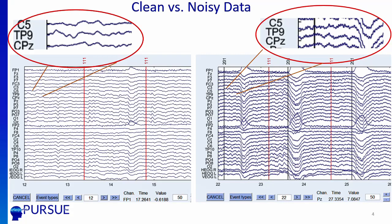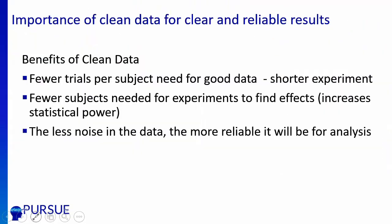For EEG, what does clean data mean? Here's an image showing on the left pretty clean EEG data, and on the right fuzzier data with more noise — a lot more eye blinks. That would be an example of noisy data.